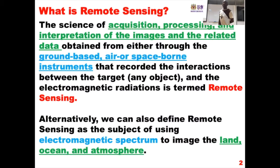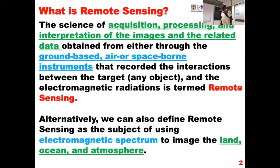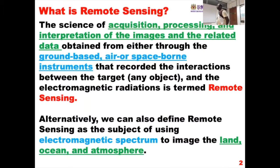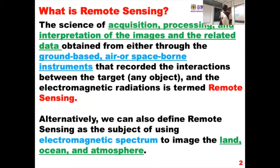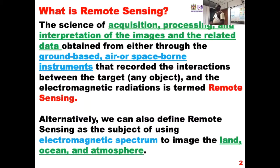What is remote sensing? If somebody asks you, you should be able to state what remote sensing is. It is the art and science of the acquisition, processing, and interpretation of images and related data, which we obtain either on the ground using ground-based systems or using spacecraft or airplanes.